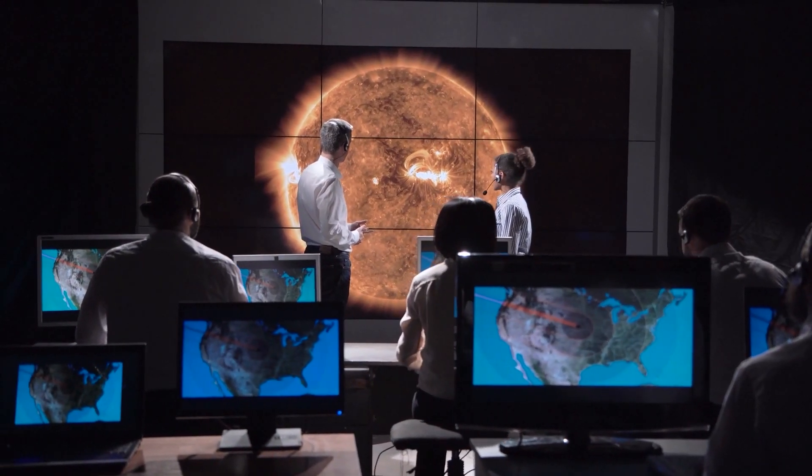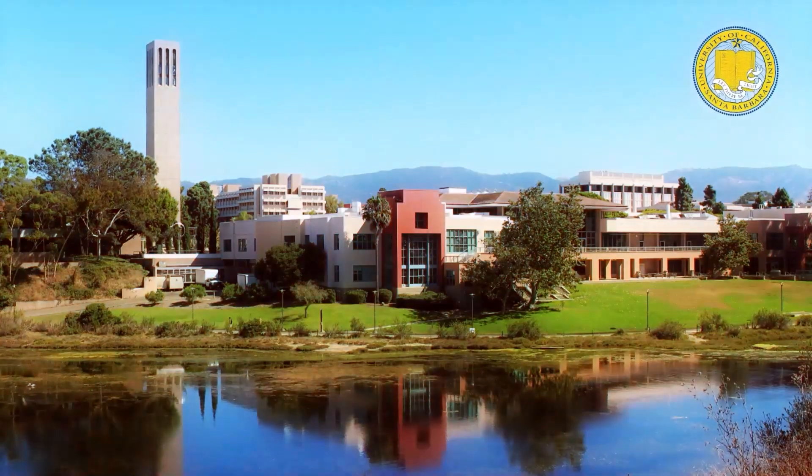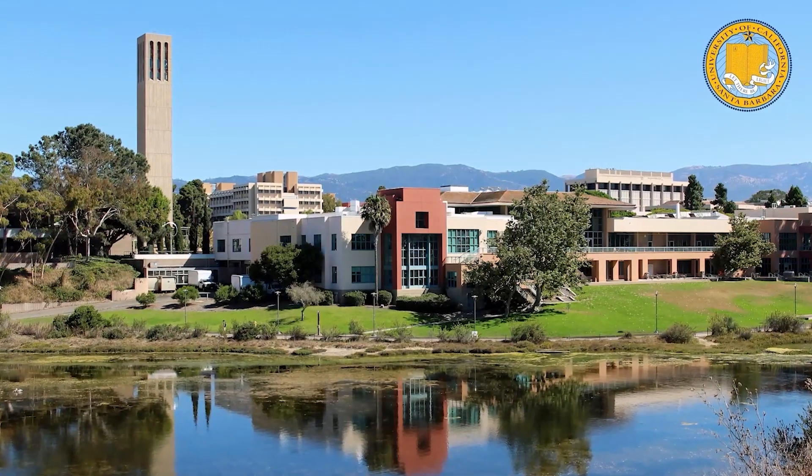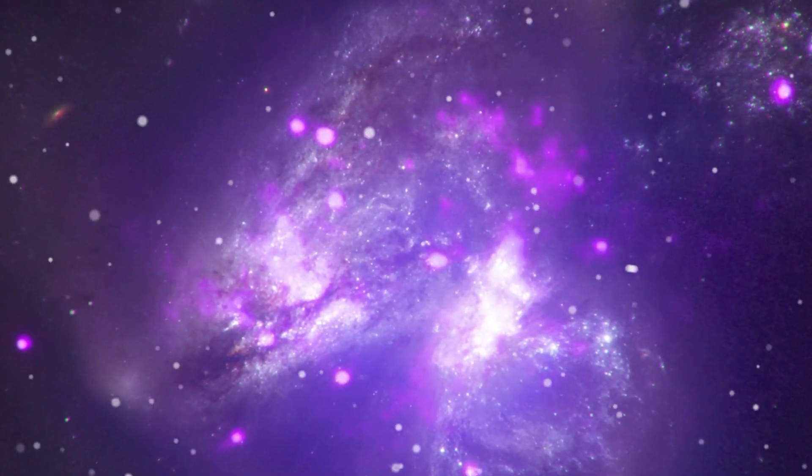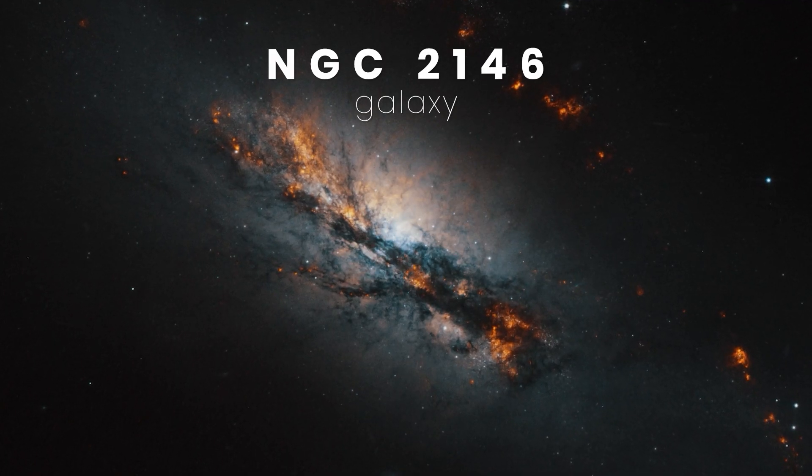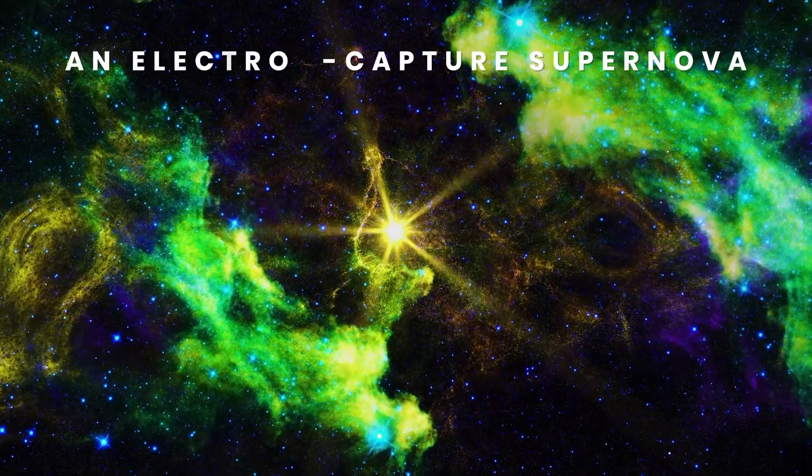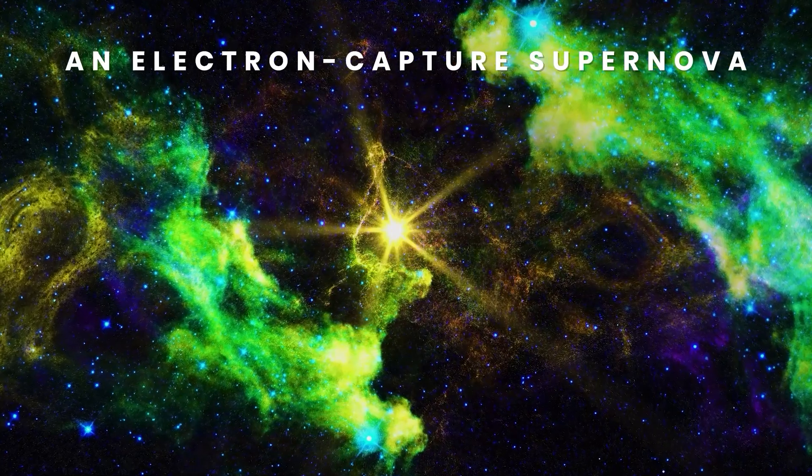Astronomers thought these were the only two ways a supernova could happen. But now, a worldwide team of scientists from UC Santa Barbara have discovered a new type of supernova, 31 million light-years away in the galaxy NGC 2146, using the Las Cumbras Observatory. This new type of stellar explosion is called an electron-capture supernova.